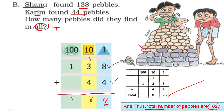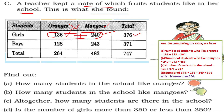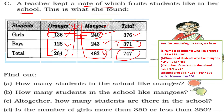A teacher kept note of which fruits students like in her school. This is what she found. Girls: 136 like oranges, 240 like mangoes — adding these gives 376. Boys: 128 like oranges, 243 like mangoes — adding gives 371. Total students who like oranges: 264. Total who like mangoes: 483. Altogether boys and girls there are 747 students.